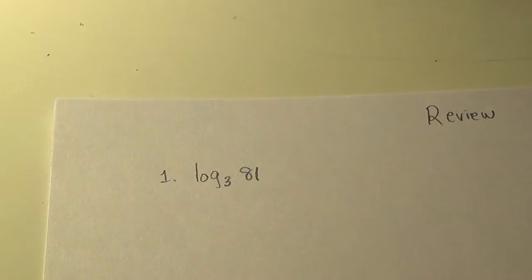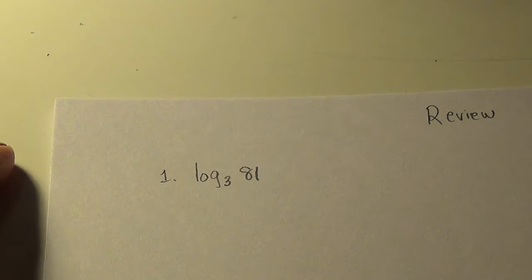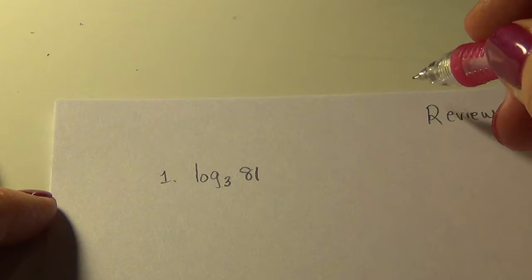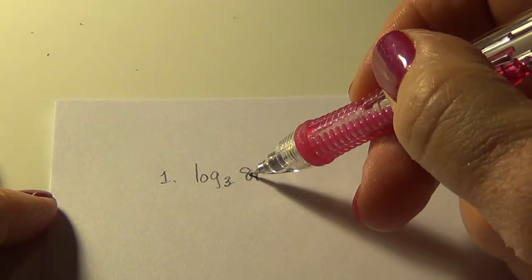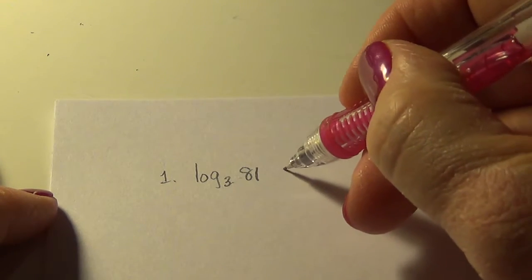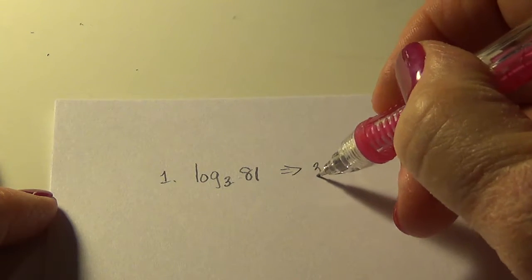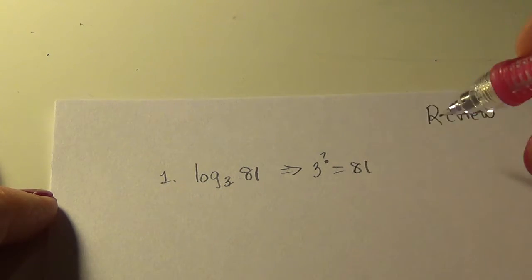So the first one is log to the base three of 81. Remembering what a log is, a log is an exponent. And it's saying, what exponent do I give this number to get this number? So I'm thinking like this. Three raised to the what gives me 81.